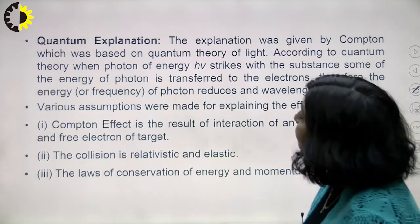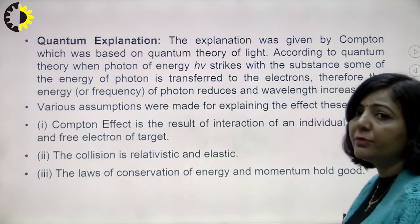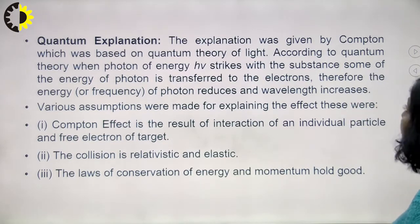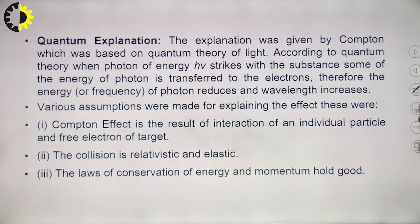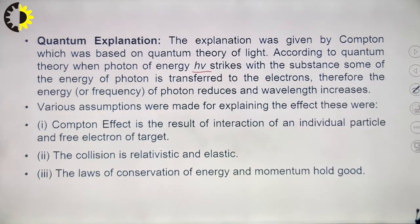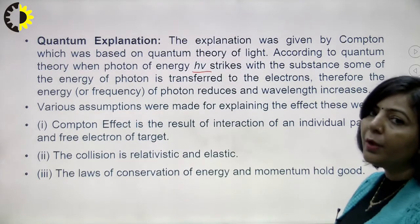The explanation of the Compton Effect was given by Compton based on the quantum theory of light. According to quantum theory, when a photon of energy hν strikes a substance, some of the energy of the photon is transferred to the electron.